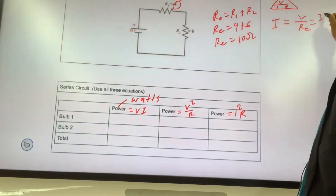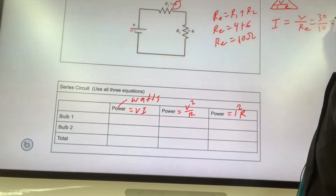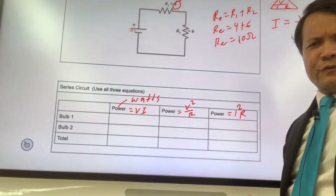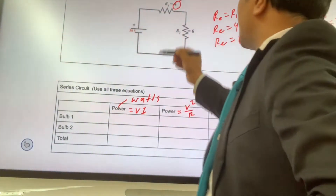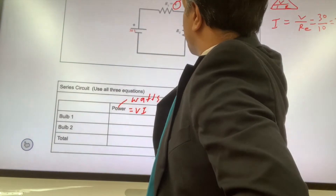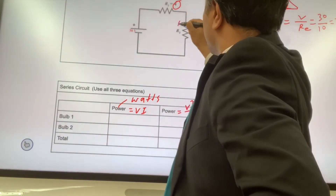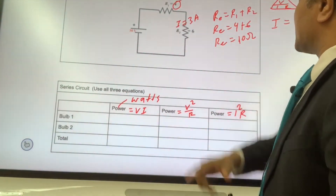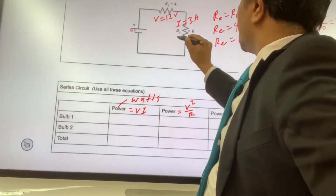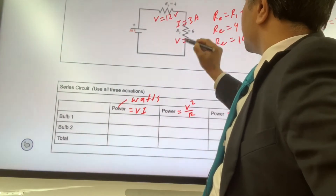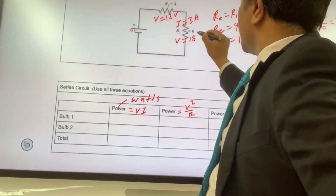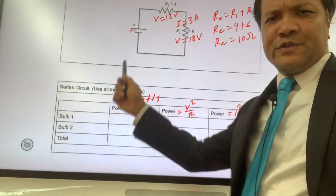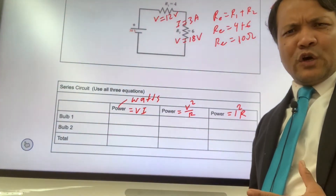The total voltage is 30V and the resistance is 10 ohms, so the current is 3 amps. This is a series circuit, so the same current flows throughout — 3 amps. The voltage across each resistor: voltage equals current times resistance, giving 12V across R1 and 18V across R2. That's 12 plus 18, which equals 30V — satisfying Kirchhoff's voltage law.